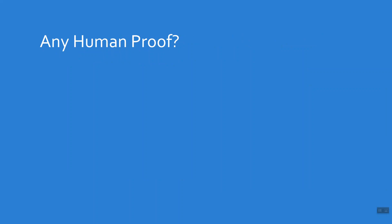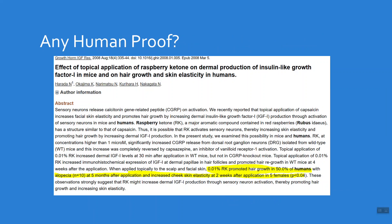So here's the other reason why I said, can it do anything else? Any human proof for raspberry ketones? And here we go effect of topical application of raspberry ketone on dermal production of insulin, like growth factor one in mice and get this on hair growth and skin elasticity in humans. Basically they took a topical preparation of raspberry ketones and gave it to people. Again, small group of people. We're only talking about like maybe 10 people here. And after several months of use, their skin started to seem more elastic, but also they appeared to grow hair.